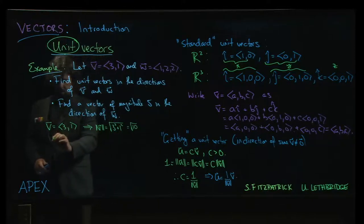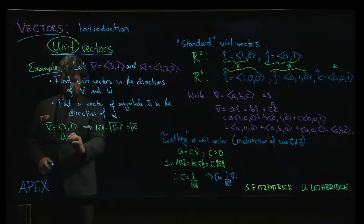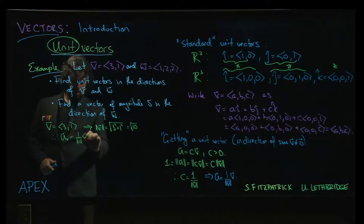And that means we can take the unit vector, well let's call it maybe uv, unit vector in the direction of v, to be 1 over root 10 times (3, 1).